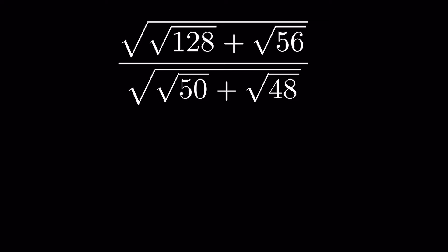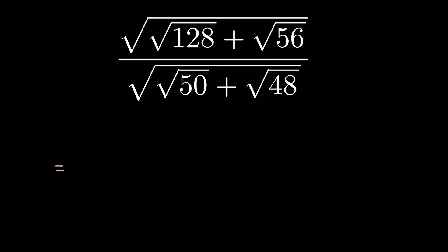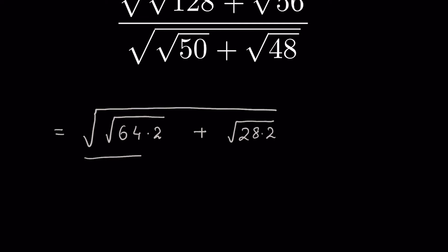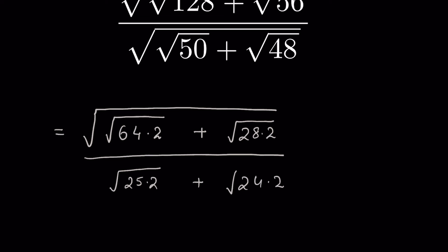So let's try. We write 128 as 64 times 2 under square root, plus 56 as 28 times 2 under square root, all under square root. Upon 50 as 25 times 2 under square root, plus 48 as 24 times 2 under square root, all under square root.